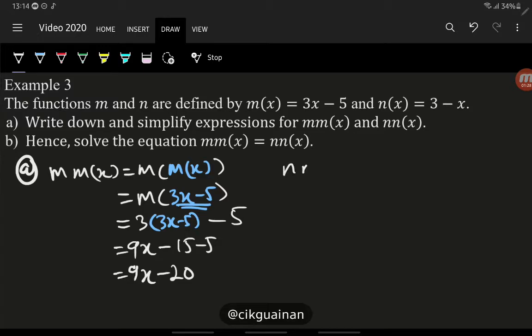n(n(x)) equals, so n we have inside, what we have inside? Another n(x). So let's define the inside one first. n(x) is 3 minus x. So then we define the outside n is 3 minus x.